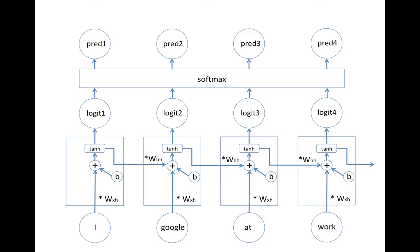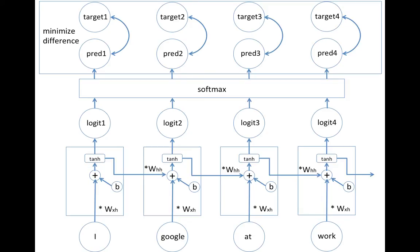Now I'm going to explain how training is done. I slightly changed Y to 'logit' and let's call the softmax output 'pred' for a clear explanation. This is supervised learning, meaning you already have the answer — marked here as 'target.' You compare the difference between the target and the predictions and minimize it using the gradient descent trick. The technique is called backpropagation through time, or BPTT. Remember, even if you see 4 WXH, 4 WHH, and 4 biases here, we just have one variable for WXH, one variable for WHH, and one variable for bias.